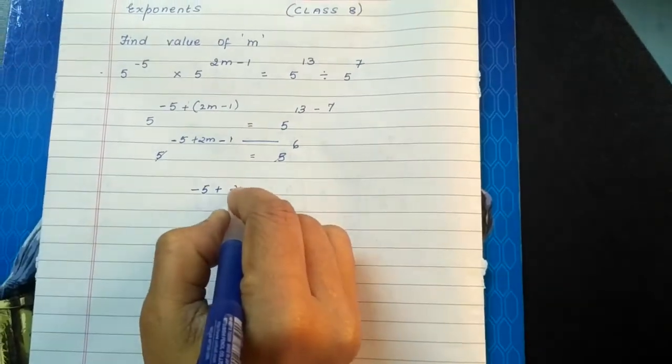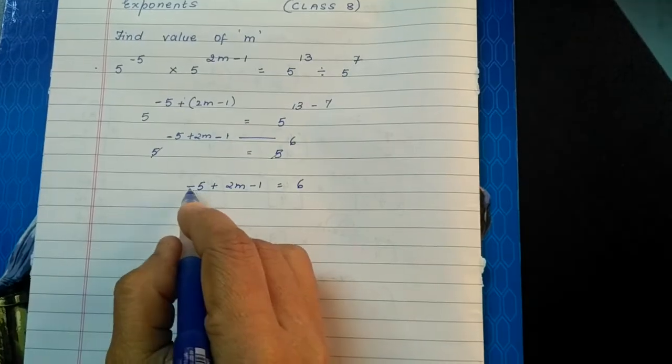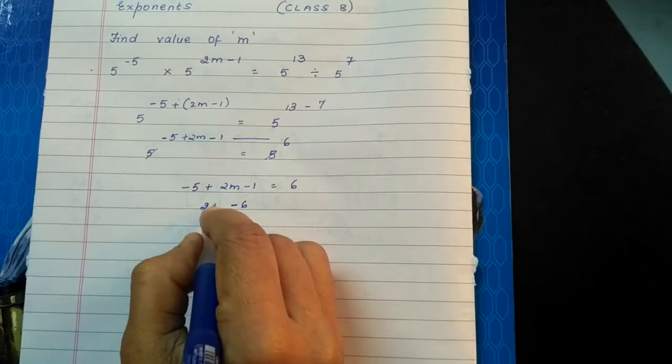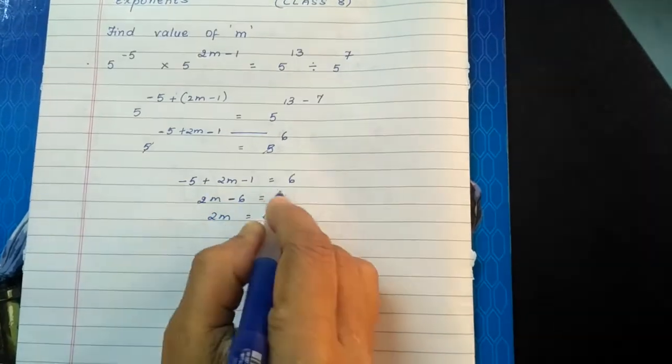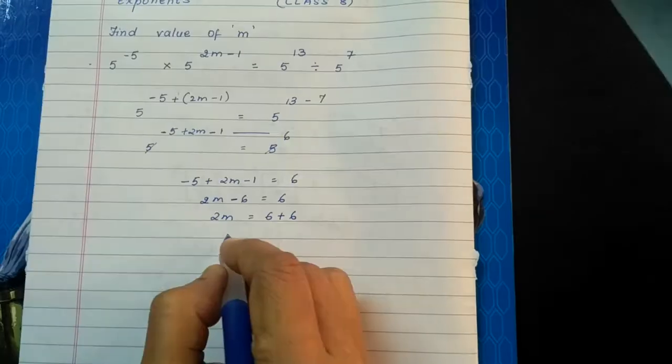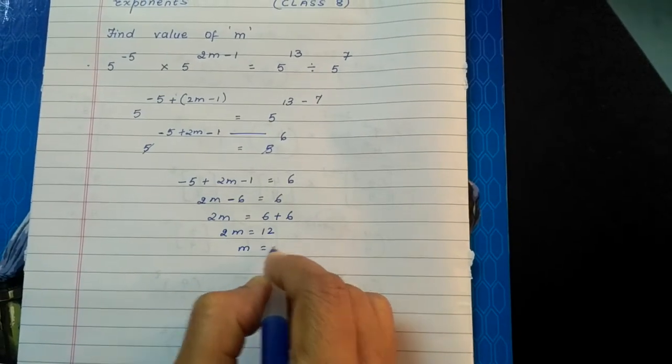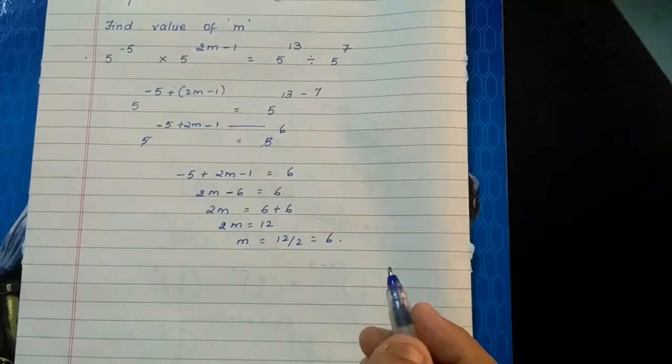-5 + 2m - 1 = 6. So -5 - 1 = -6, therefore 2m - 6 = 6. When 6 moves to the other side, it becomes plus 6. 2m = 12, so m = 12 / 2 = 6. Hope you understand.